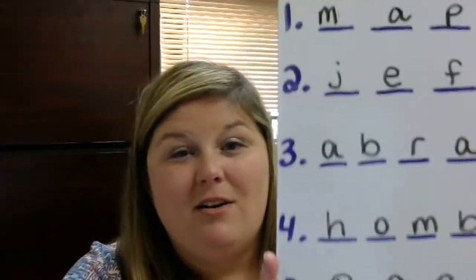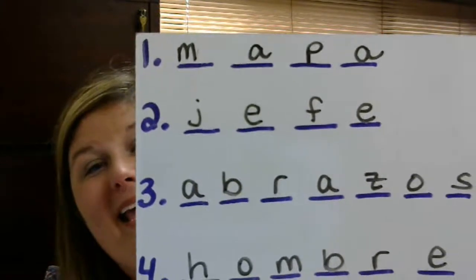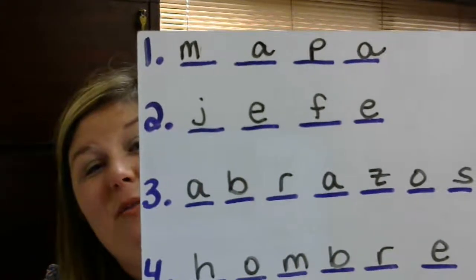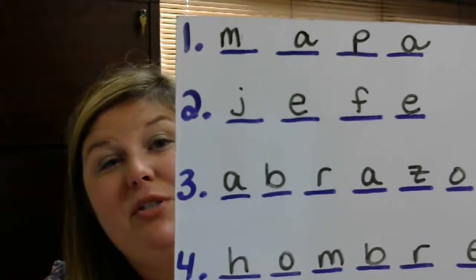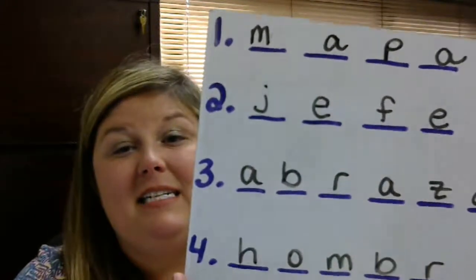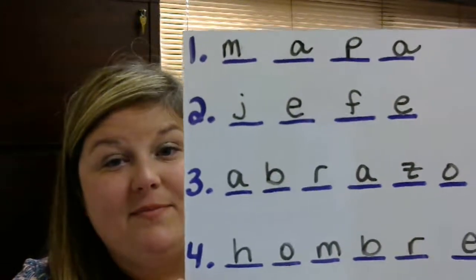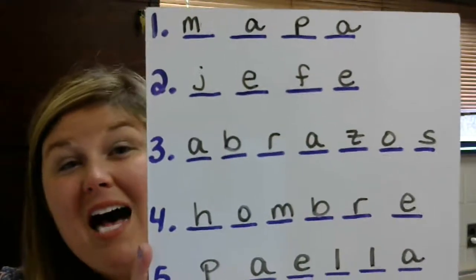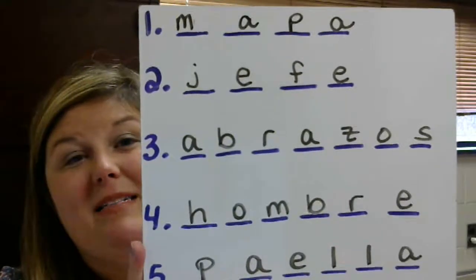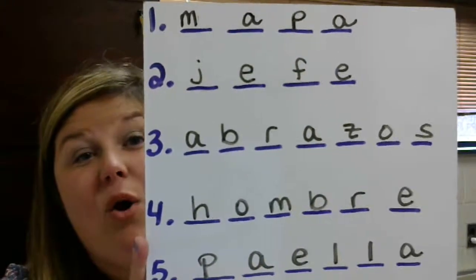Here are our answers. I'm going to go over each one with you. Numero uno, number one, is M-A-P-A. That's MAPA, which means map in Spanish. Número dos, number two, is JEFE, spelled J-E-F-E, which means boss. Number three, numero tres, is abrazos, which means hugs in Spanish, and it's spelled A-B-R-A-Z-O-S.